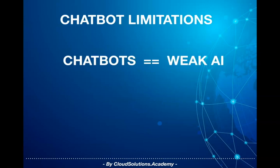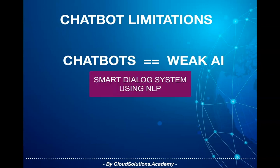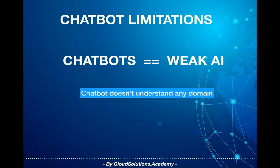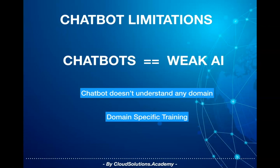Chatbots are an example of weak AI. The current generation of chatbots can be thought of as a smart dialogue system driven through techniques like NLP and fixed conversation flows. Out of the box, a chatbot doesn't understand any domain — we need to train it to understand the domain.